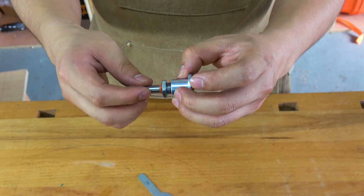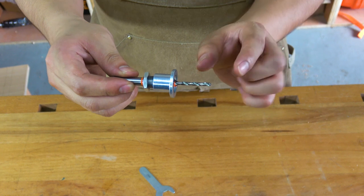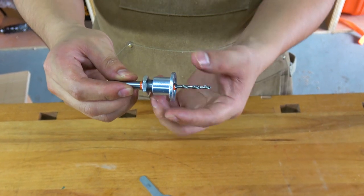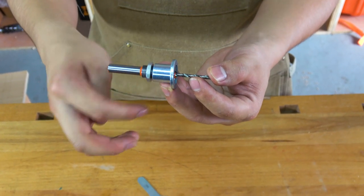Countersink Drill Bit with Adjustable Depth Stop is made of cobalt-containing high-speed steel which can help you pre-cut holes in the wood so that the screws can be easily driven into the wood.